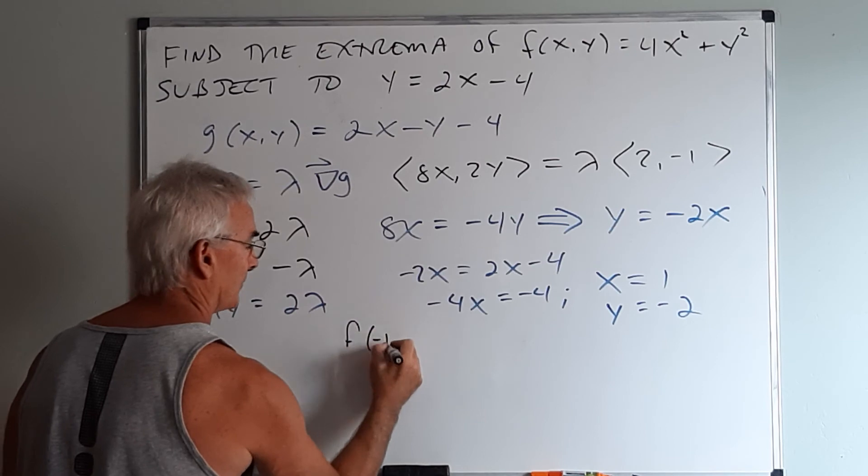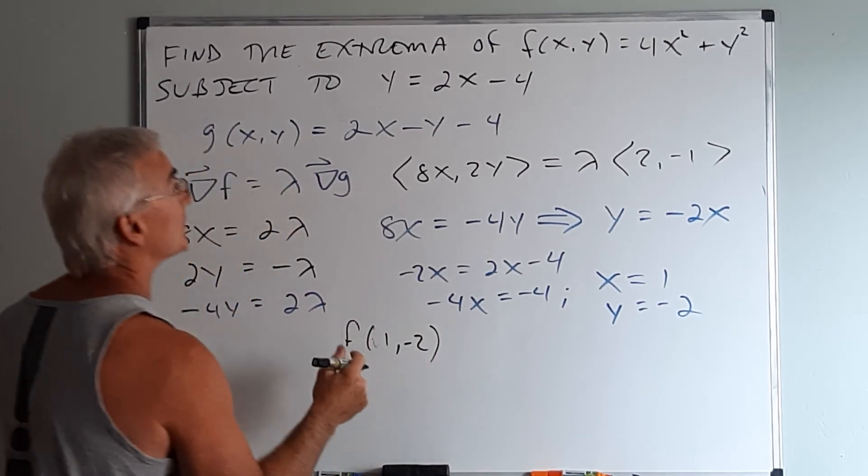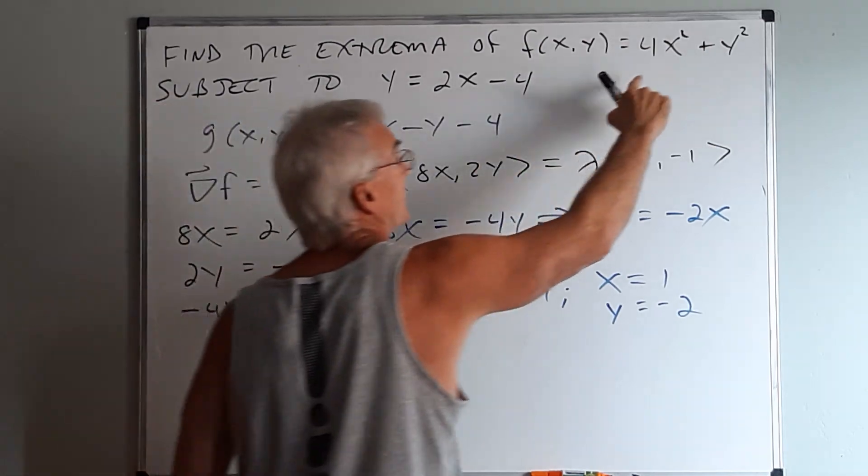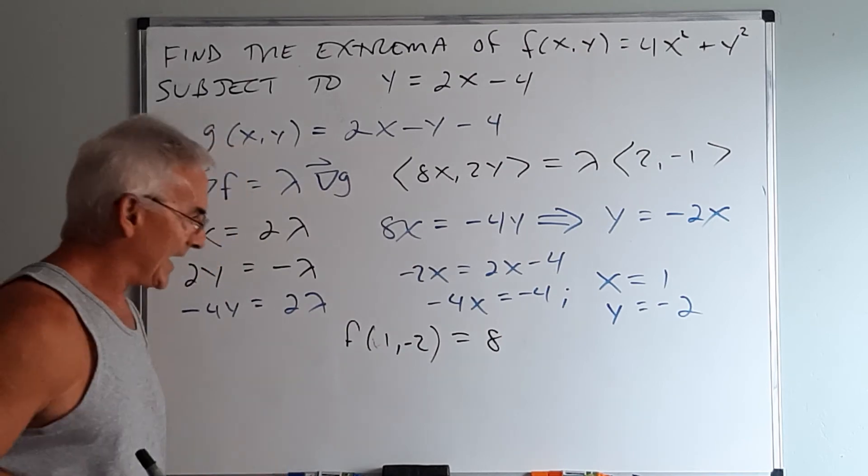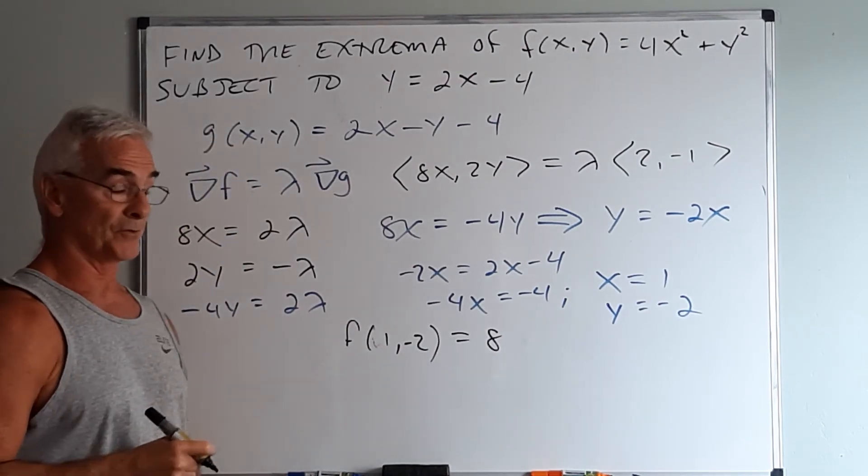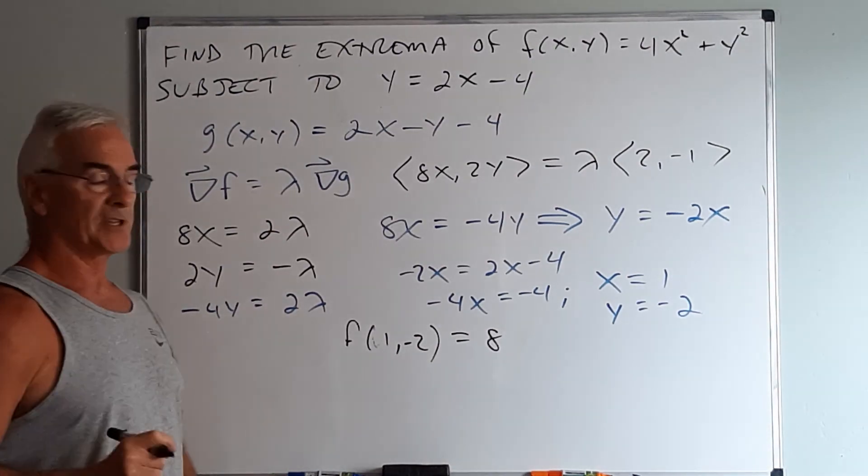So next, f of 1 comma negative 2, if I plug that into the function here, will be 4 plus 4 or 8. Now I have a value. It's an extrema, but I don't know if it's the largest or the smallest this function will ever achieve. So the test is really simple.